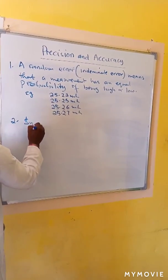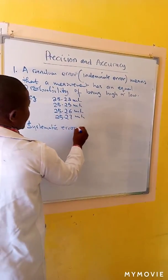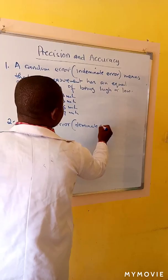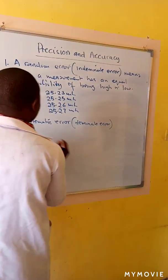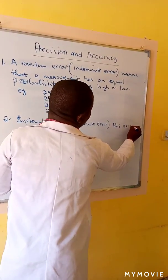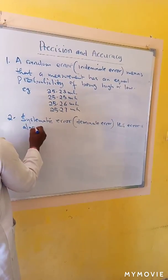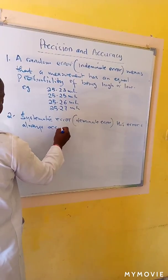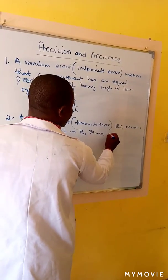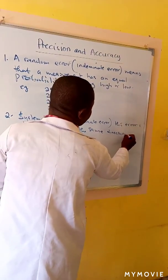Systematic error, the other name for systematic error is determinate error. This error always occurs in the same direction each time.